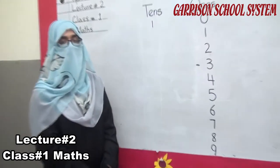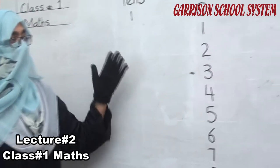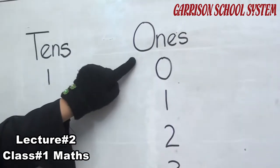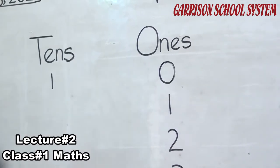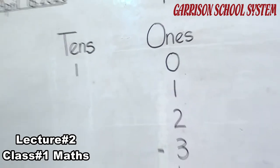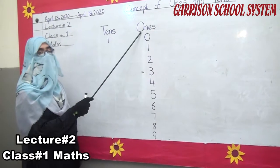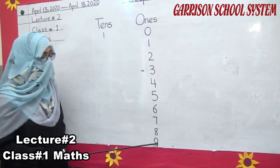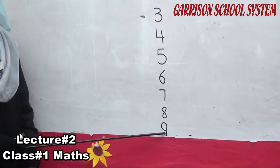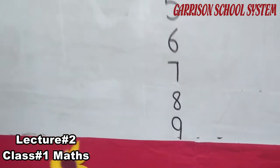Okay students, look at the board. I will make clear what ones are and what is the difference between tens. Here, we write ones. As I told you before, zero to nine — these numbers are singles, and we say they are ones. Okay. When we add nine plus one, when we add one more number to nine, it becomes ten. Look at the board — tens.